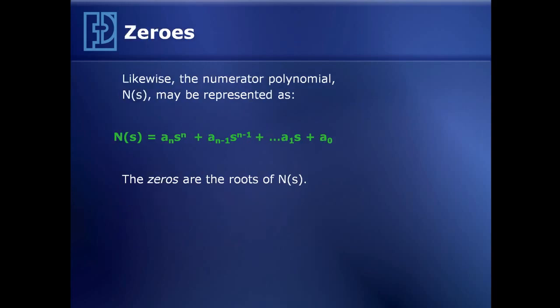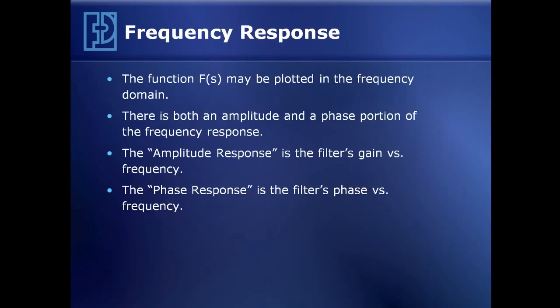Likewise, the numerator polynomial in our transfer function has a similar form to the denominator, and the roots of this polynomial are called the zeros of the filter. The frequency response of the filter is the plot of the filter in both amplitude and phase domains — we call these the amplitude response and phase response of the filter.